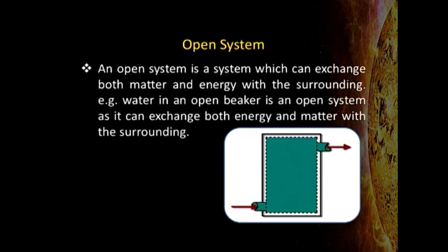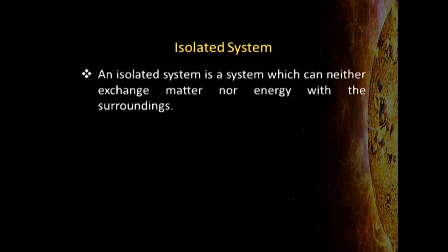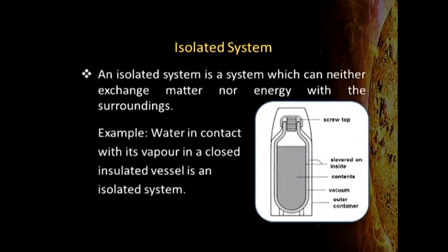Let us take each system one by one. In an open system, the exchange of both energy and matter is possible — a beaker being heated can lose solvent and also exchange heat with the surroundings. In a closed system, the boundary does not allow matter to pass through, but heat can be exchanged — any vessel closed by a cover does this. An isolated system is unique because it allows neither matter nor energy to be exchanged. The nearest example we have is a thermos flask, where energy is conserved and matter cannot pass through.